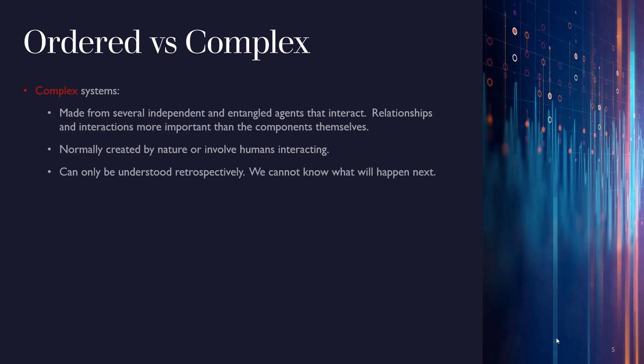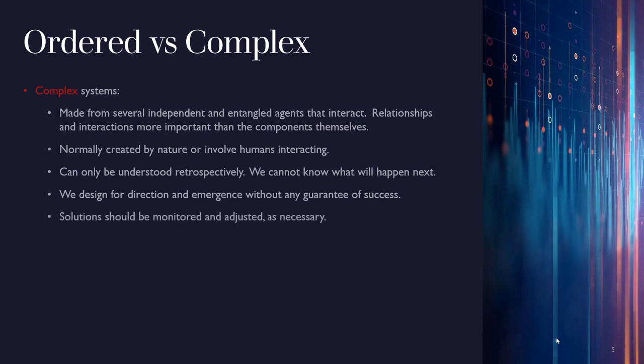Complex systems can only be understood retrospectively — we cannot know what will happen next. Think about a meeting tomorrow at 11am: you cannot predict with certainty if people will even show up, and even if they do, you cannot predict the exact conversation that will take place. It's unpredictable; there are just too many variables at play. So with a complex system, when we want to make changes, we design for direction and emergence, and there's never a guarantee of success.